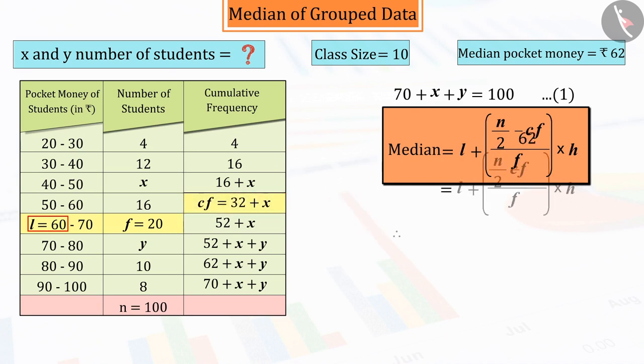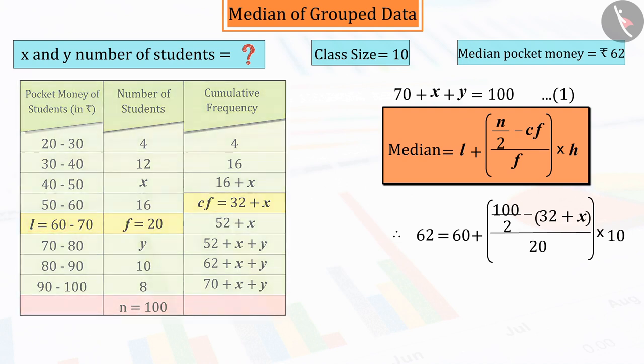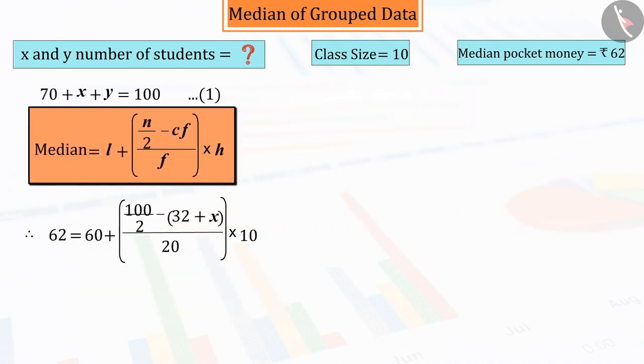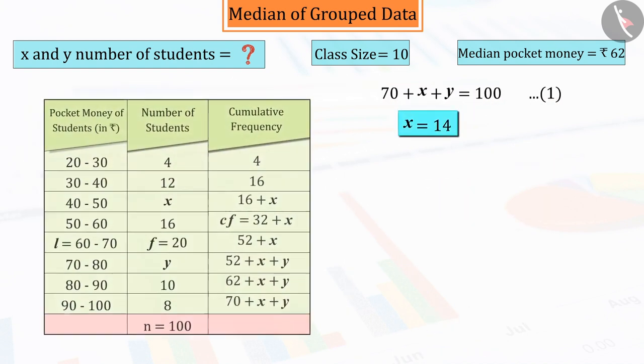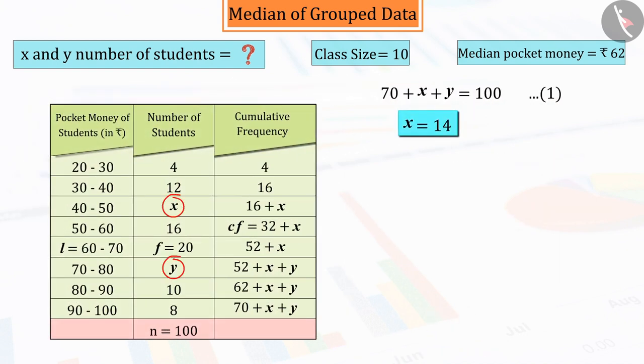Putting all these values in the median formula, we get 14 as the value of x. Since we have to find the number of students x and y,